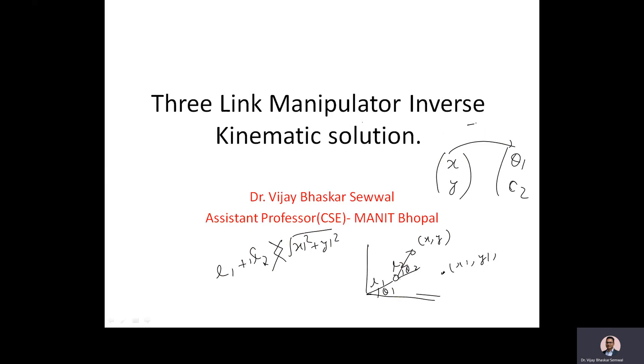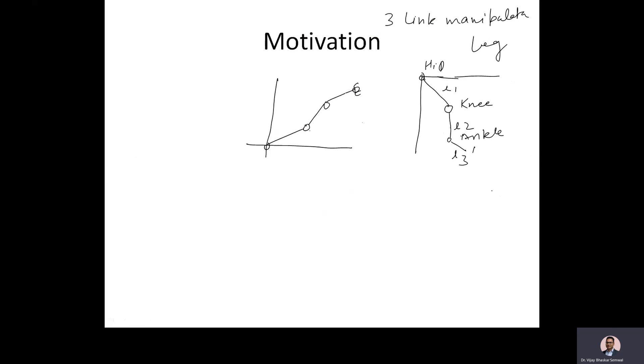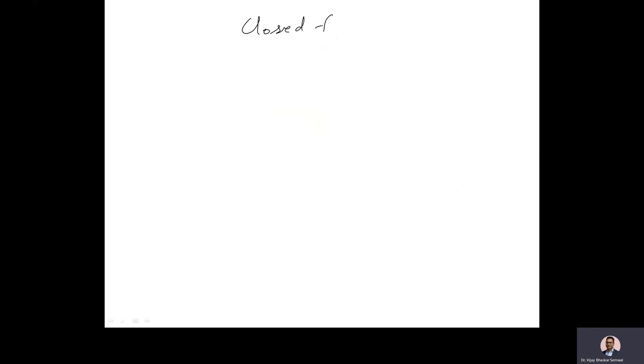When theta one and theta two are known and you calculate x and y, that is forward kinematics. When x and y are given and you need to find theta one and theta two, that is inverse kinematics. Today I will discuss the inverse kinematics solution. There are different techniques: geometrical solution, algebraic solution — these are closed-form solutions. Today I'm going to discuss the closed-form algebraic solution for the two-link manipulator.